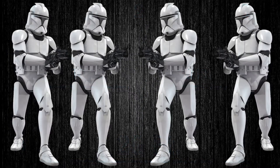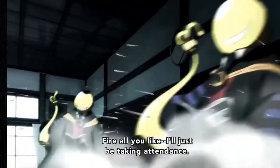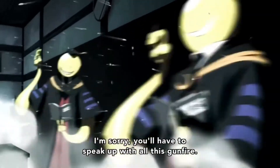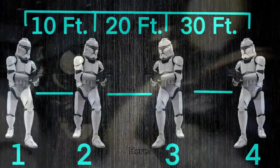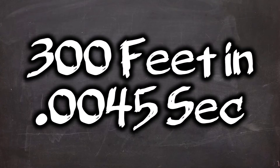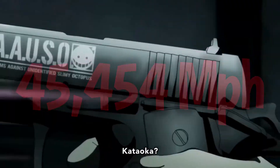With 3 clones calculated, we can now move on to 4 clones. For this, we will be using the distances between point 1 and 2, point 2 and 3, point 3 and 4, point 1 and 3, point 2 and 4, and point 1 and 4. Obviously, the more clones the individual has, the exponentially faster they become. Using all these distances, we find that to have this many clones at this distance apart, the individual would need to move 300 feet in .0045 of a second. This would bring their speed up to 45,454 miles per hour, or Mach 59.